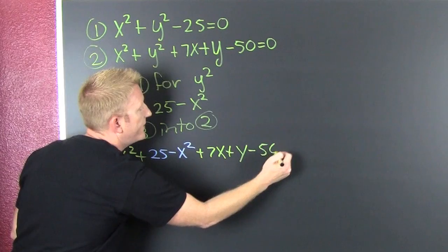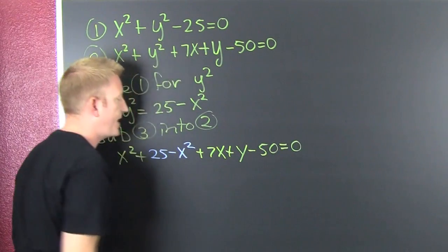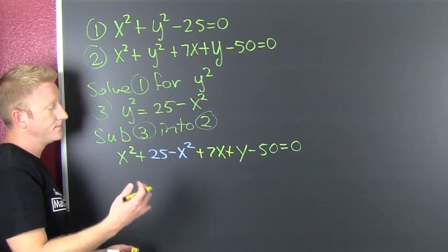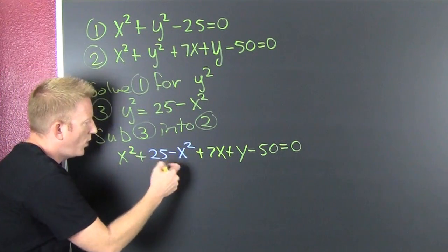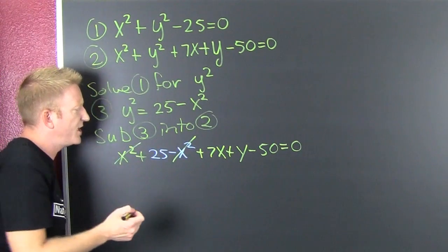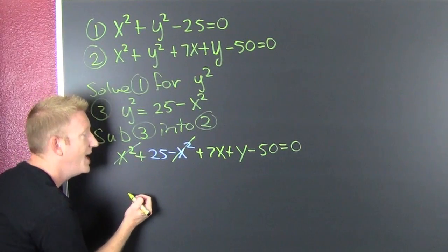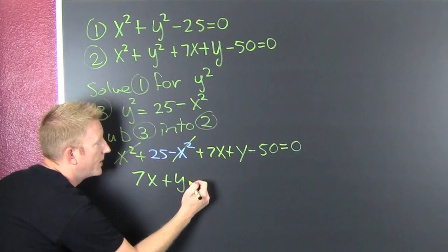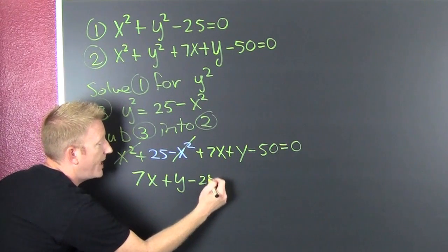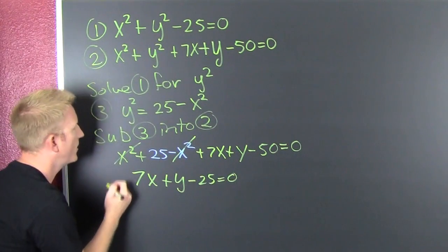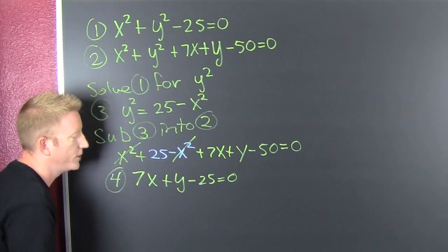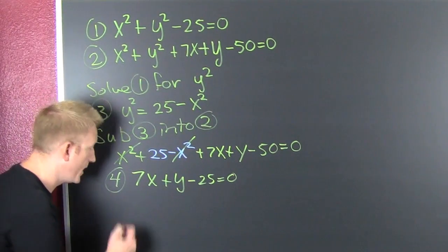Now I'm gonna gather, collect, and combine my like terms. That's gonna work out to x squared plus 7x plus y minus 25 equals 0. I'm gonna call that equation 4. So then I'm gonna take 4 and solve it for y.